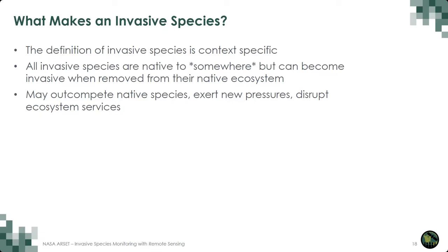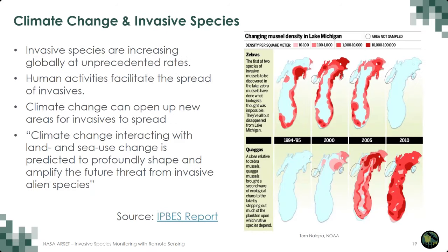It's important to note that the definition of invasive species is context specific and that all invasive species are native to somewhere. When removed from their ecosystem, they may become invasive — they may outcompete native species, exert new pressures, or disrupt ecosystem services. Climate change, along with the continued intensification and expansion of land use change, has resulted in the increase of invasive species at unprecedented rates.